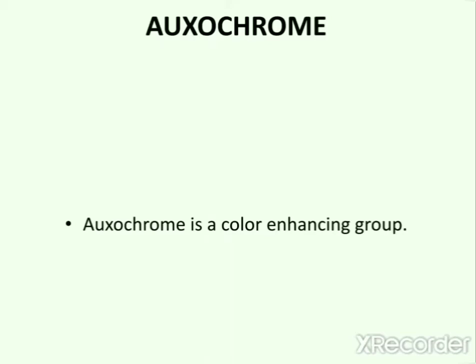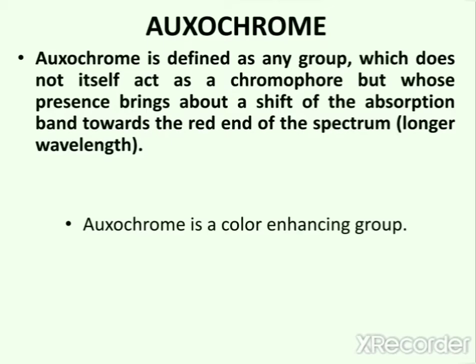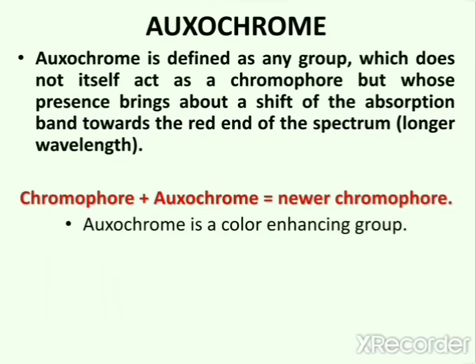Now the next important term is auxochrome, which is a color enhancing group. According to a modern definition, auxochrome is defined as any group which does not itself act as a chromophore, but whose presence brings about a shift of the absorption band towards the red end of the spectrum, which is the longer wavelength region. So auxochrome itself does not impart any color, but it shifts the absorption maximum toward the longer wavelength, and that is how it helps in producing colors. When auxochromes are combined with a chromophore, a new chromophore generates.